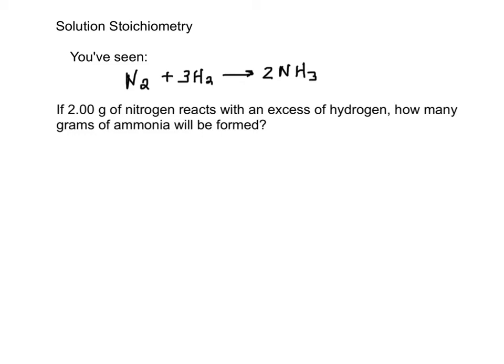So you've seen reactions like N2 plus 3H2 gives 2NH3, and if 2 grams of nitrogen reacts with an excess of hydrogen, how many grams of ammonia will be formed? So this is just your basic stoichiometry, which we've been doing.